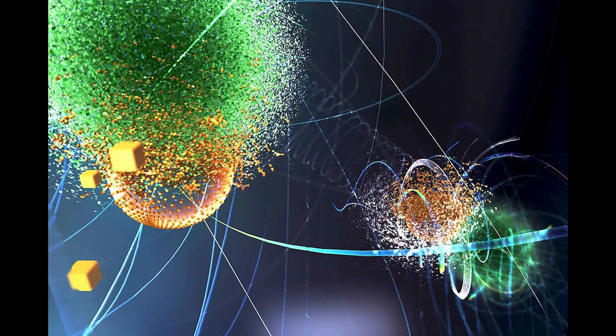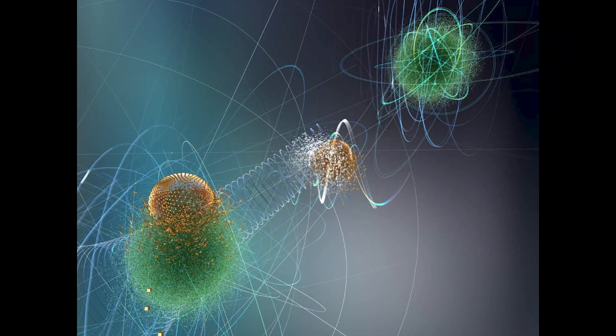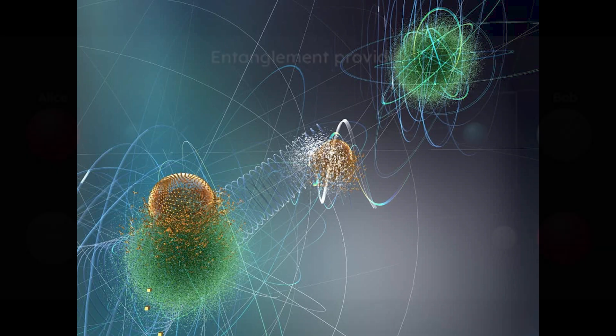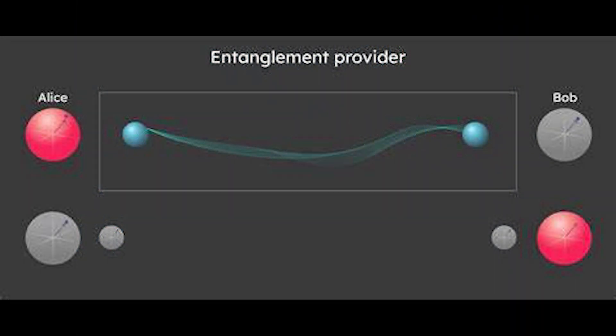Quantum entanglement occurs when two or more particles become linked in such a way that the state of one particle instantly affects the state of the other, no matter the distance between them. When particles are entangled, their properties are correlated.